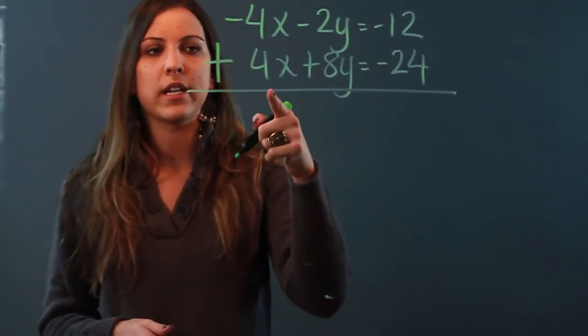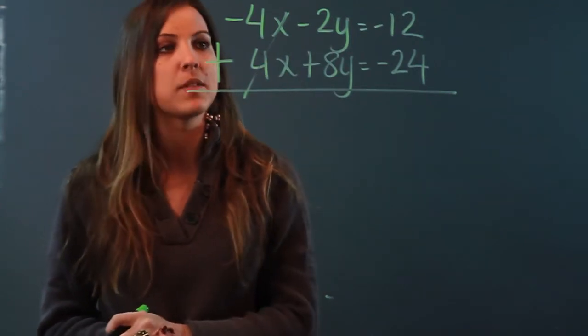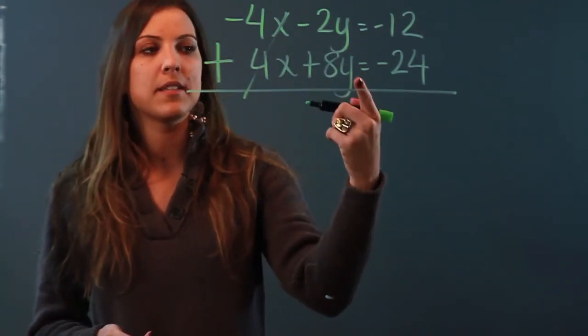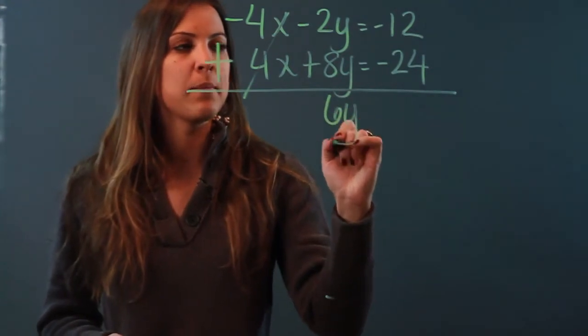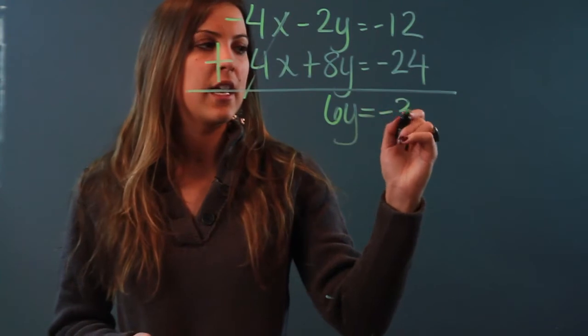So when I do that negative 4x plus 4x cancel out and I'm left with 0 so I've already gotten rid of one of the variables. And then negative 2y plus 8y is equal to 6y and negative 12 plus negative 24 is equal to negative 36.